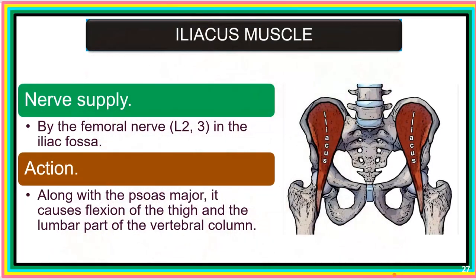The nerve supply to the iliacus is the femoral nerve, which is L2-L3. The action is flexion of the thigh, which it does alongside the psoas major muscle, causing flexion of the thigh and the lumbar part of the vertebral column.